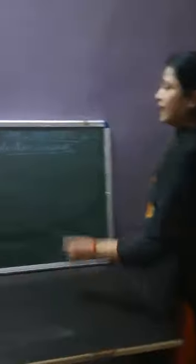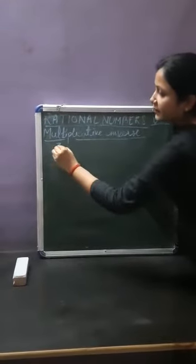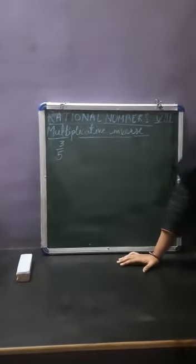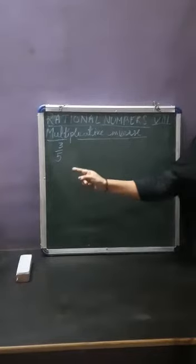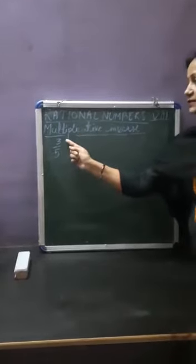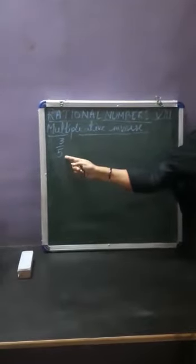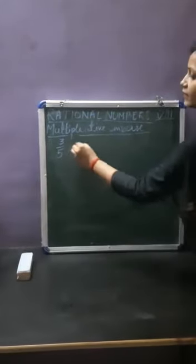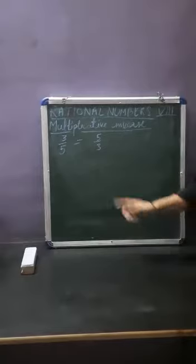If you are having any rational number, like 3 upon 5, and you have to tell the multiplicative inverse of 3 upon 5 — here we will convert it. The value of the numerator is 3 and the value of the denominator is 5. So the multiplicative inverse of 3 upon 5 will be 5 upon 3. It is called the reciprocal of this.